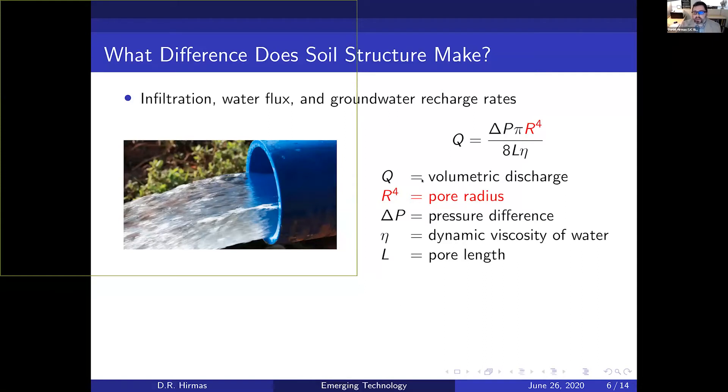The reason for that is because of Poiseuille's equation, which relates the volumetric discharge, Q, to the size of the pore transmitting water. You can see that R is raised to the fourth power. So if the radius of the pore increases just by a little bit, the volumetric discharge drastically increases. A slightly bigger pore can transmit so much more water than a smaller pore.